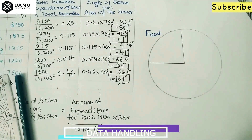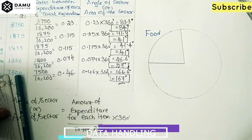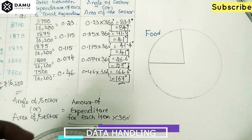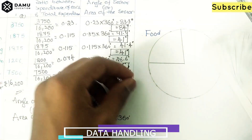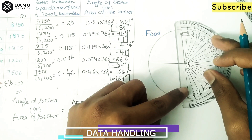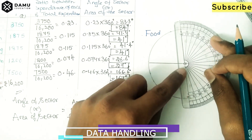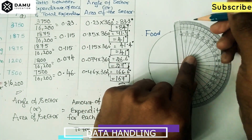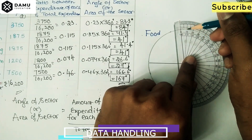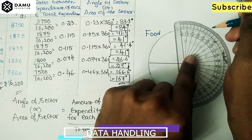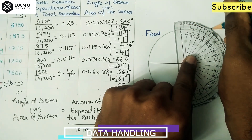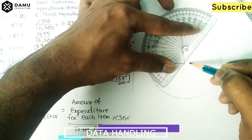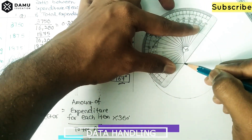Next, for health, place your protractor along the new baseline and measure 41 degrees — counting 0, 10, 20, 30, 40, 41. Draw a line to that mark. This sector is for health.